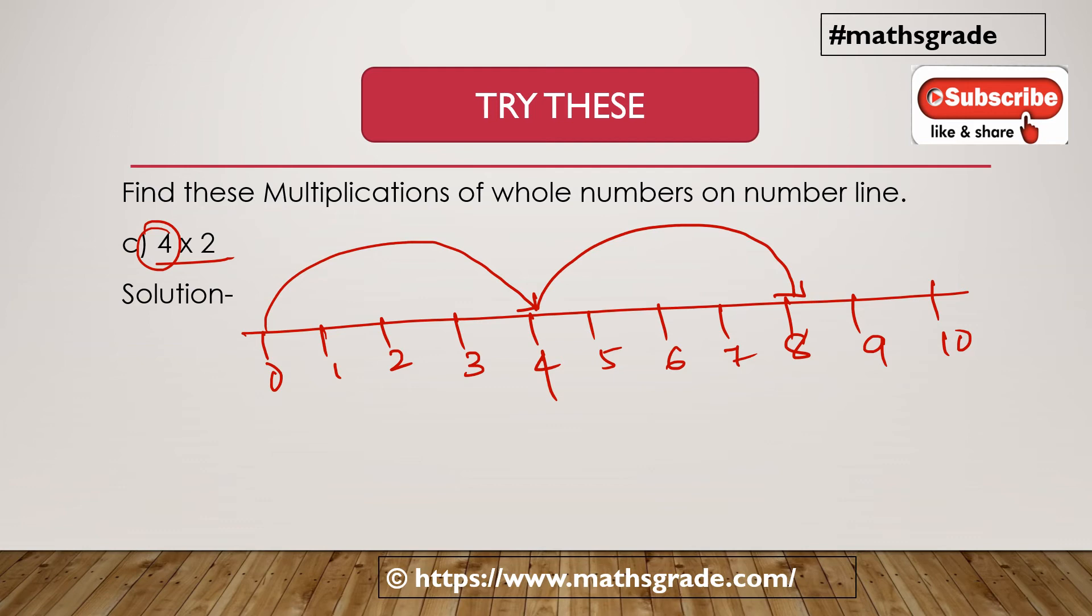So the number is 8. So 4 multiplied by 2 is 8. And this is the representation of multiplication of whole numbers, that is 4 multiplied by 2 which is 8 on the number line.